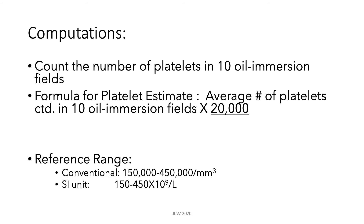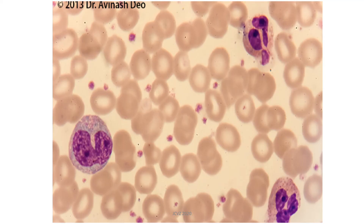To perform the platelet estimate, count the number of platelets in 10 oil immersion fields, then use the formula to compute your platelet estimate. The reference range for platelets is 150,000 to 450,000 platelets per cubic millimeter, or 150 to 450 × 10⁹ per liter using SI units. In this figure, pause and try to count the number of platelets — if you counted 19 to 20 platelets, you would be correct.